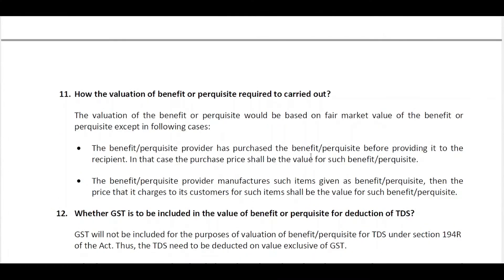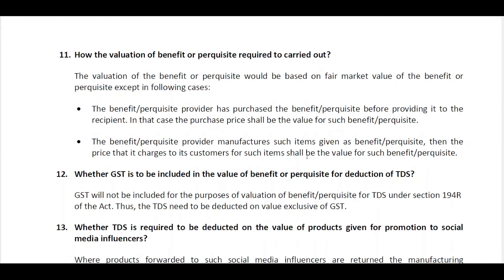On valuation: CBDT has clearly prescribed that if the goods or benefits are purchased before providing them to the recipient, the purchase price shall be considered as the value of the perquisite. In case the goods are manufactured, the price that the manufacturer charges customers for those products shall be the value. Additionally, GST included in the value of the perquisite will not be included for the purpose of valuation of benefits under Section 194R — only the base cost amount is the value of the perquisite.